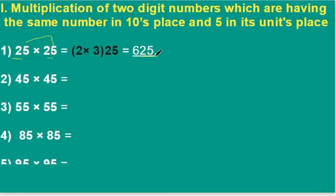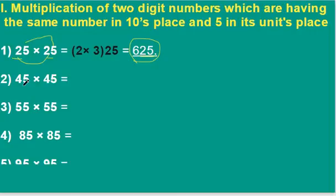The last two digits of our answer should be 25, and for the first digits we have to multiply 2 into the next number of 2, that is 3. Therefore 2 into 3 is 6, and the last two digits are 25, so our answer is 625. See this one: 4 into the next number of 4, that is 5, is 20, and the last two digits are 25.